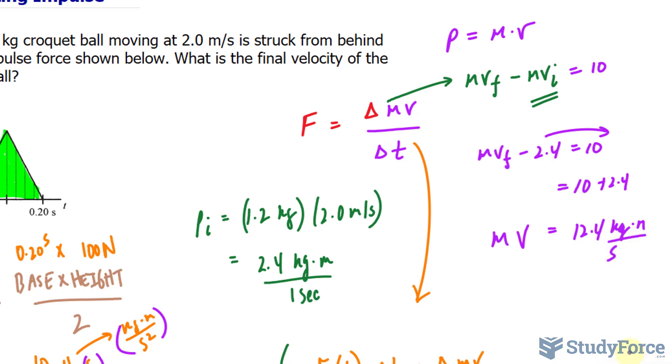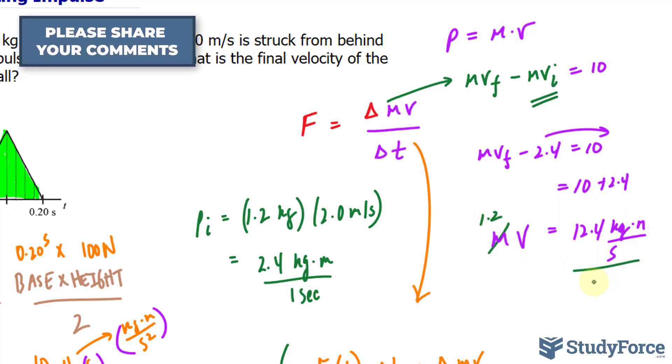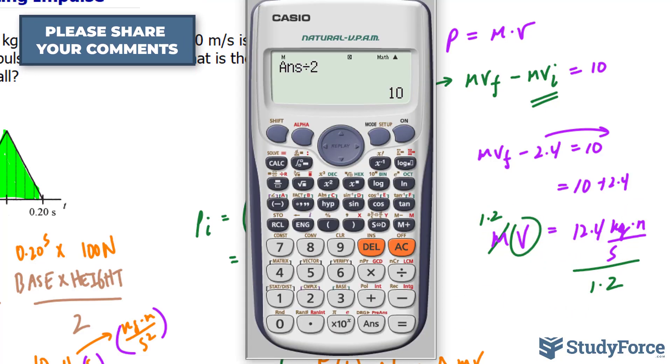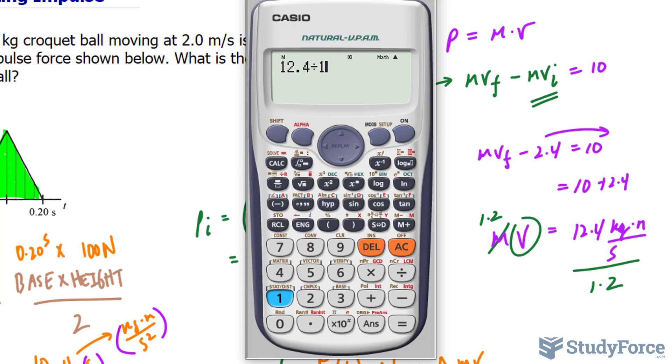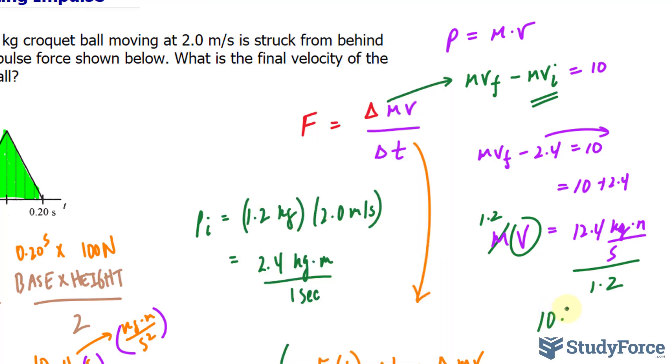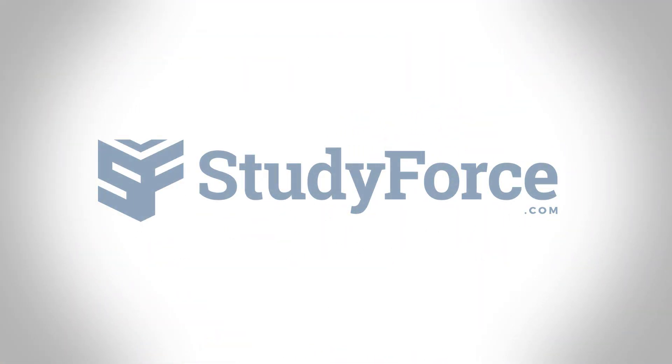We can now calculate the final velocity by isolating for V. If we divide both sides by the value of M being 1.2, we will have V isolated. So 12.4 divided by 1.2 makes 10.3 meters per second. And there you have it - that is our quick tutorial on how to calculate impulse.